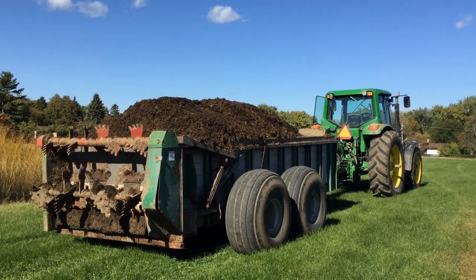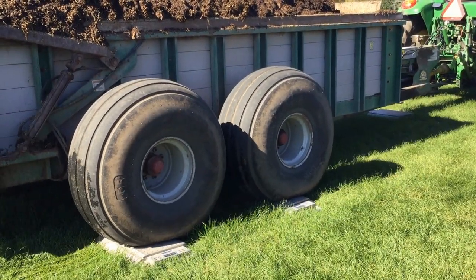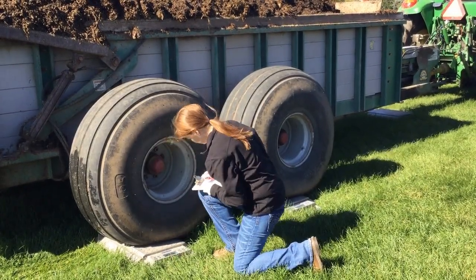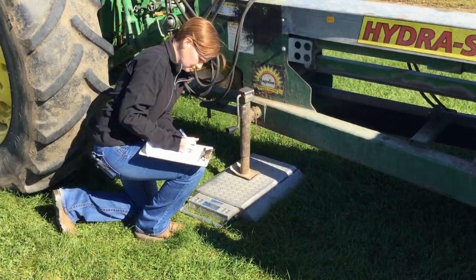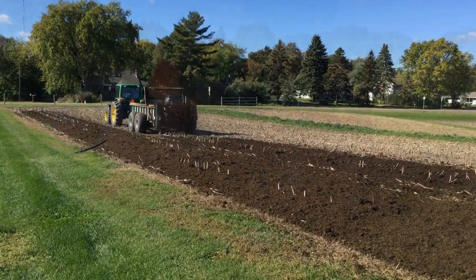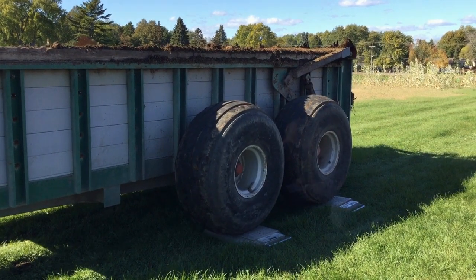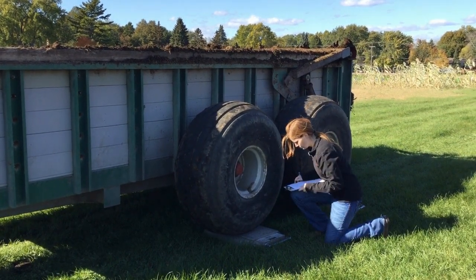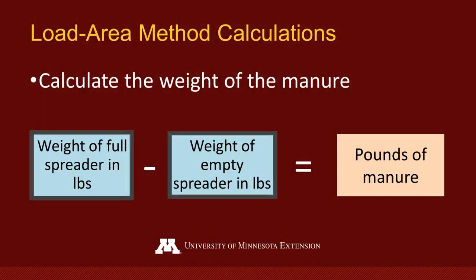The first step is to weigh the spreader when it is full of manure and record the weight. Make sure to include the tongue weight of the spreader. Once the load is spread, weigh the spreader empty and record the weight. By subtracting the empty weight from the full weight, you can get the weight of the manure.